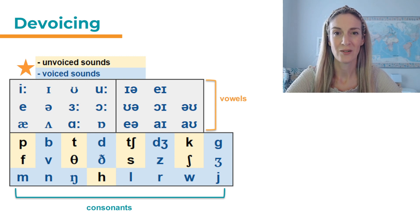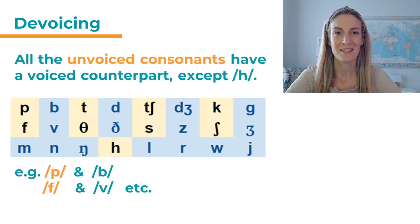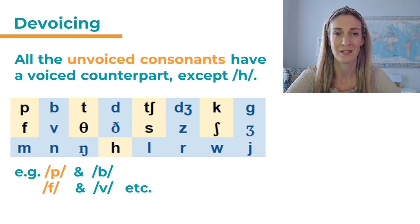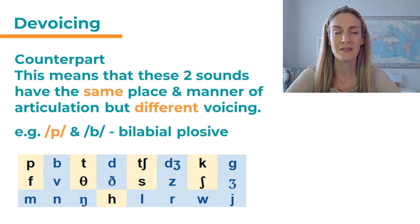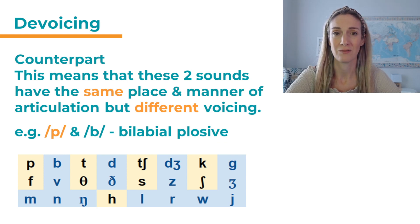Let's take a closer look at the consonants. Here is the chart again and you can see the unvoiced sounds in yellow. All of those unvoiced consonants have a voiced counterpart, except for 'h' in the last row. We've got 'p' with its counterpart 'b', 't' with 'd', 'f' with 'v', etc. And what do we mean by counterpart? This means that the two sounds have the same place and manner of articulation, but different voicing.